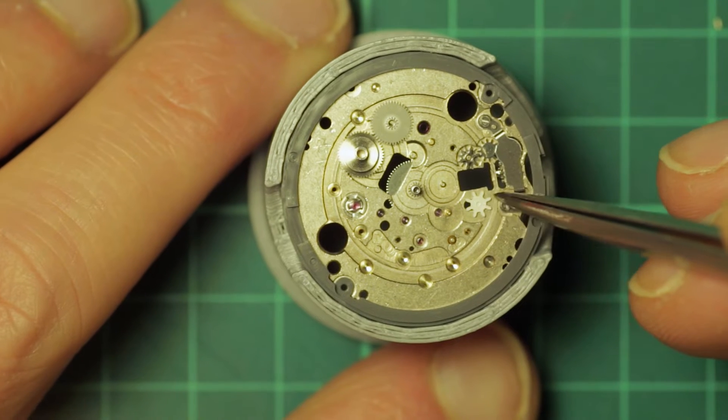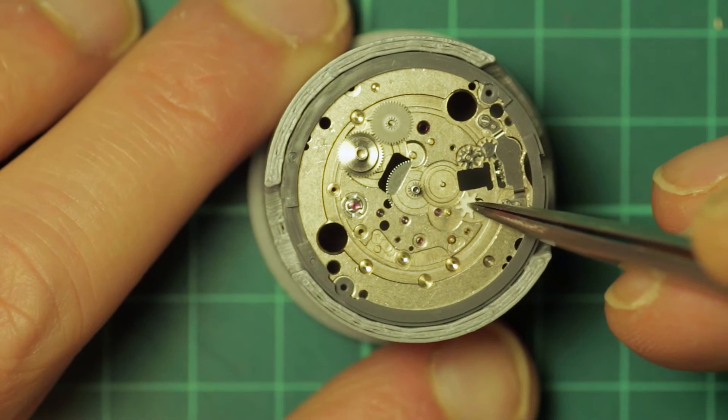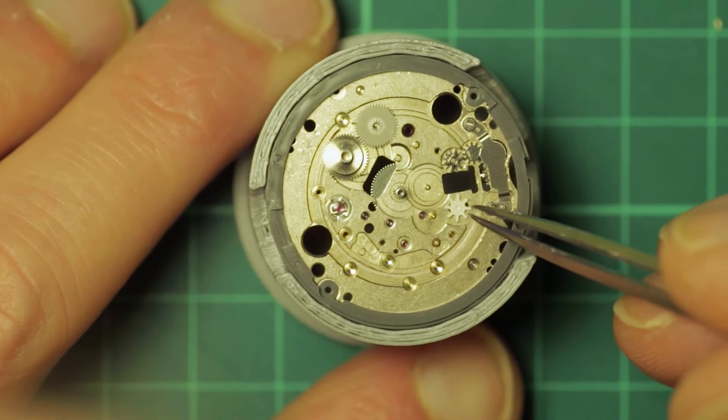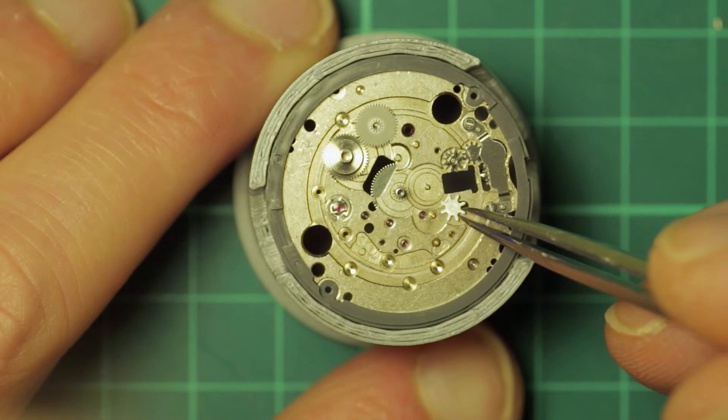And then the hour wheel, minute wheel, and then the sliding rapid date change plastic gear which simply just sits in a slot.